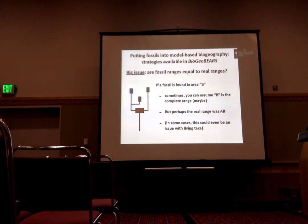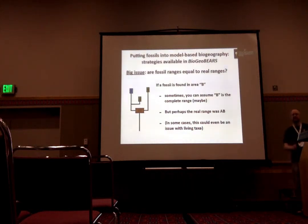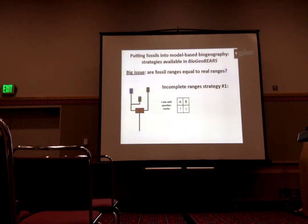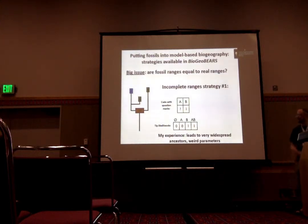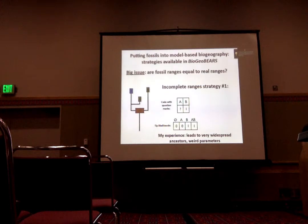All of these assume that you know the range at any particular fossil point on your tree. Sometimes you might be able to assume that, especially if all your species are restricted to single continents — but often you don't really know. You know the fossil has been found in region A, but maybe it used to live in B and humans drove it extinct 500 years ago, or it hasn't been detected there. One strategy is what I call the question mark strategy: for areas where you don't see the fossils, you put a question mark. My experience is that this leads to very widespread ancestors and weird parameters — it's easy for models to say everything lives everywhere because there are no negative constraints on ancestral ranges.